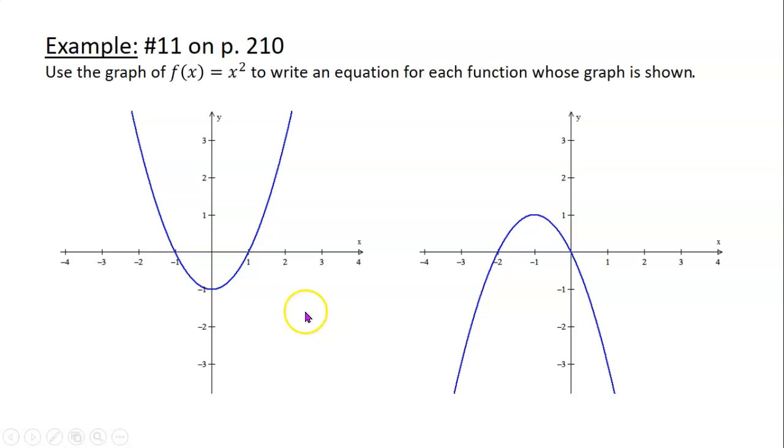Next example. Use the graph of f(x) = x² to write an equation for each function whose graph is shown. So when we look at this graph, it looks a lot like x squared, same shape, but it's not in exactly the same position. So compared to just plain old x squared, what's been done to this? Answer: it's been shifted down one. So if we want to get something that looks like this, we've got to start with x² and shift it down one unit, which means the equation would be y equals x² minus 1.